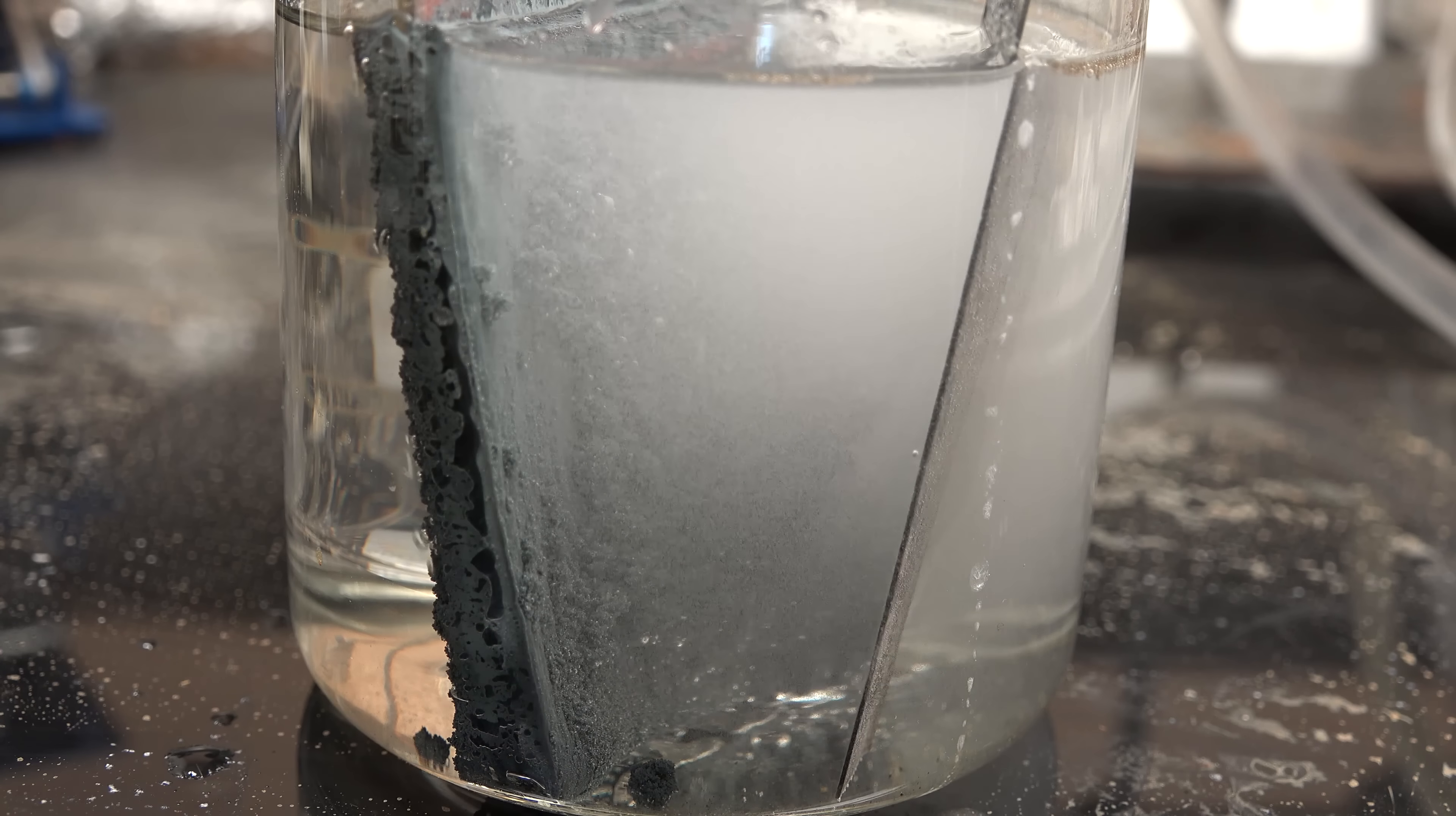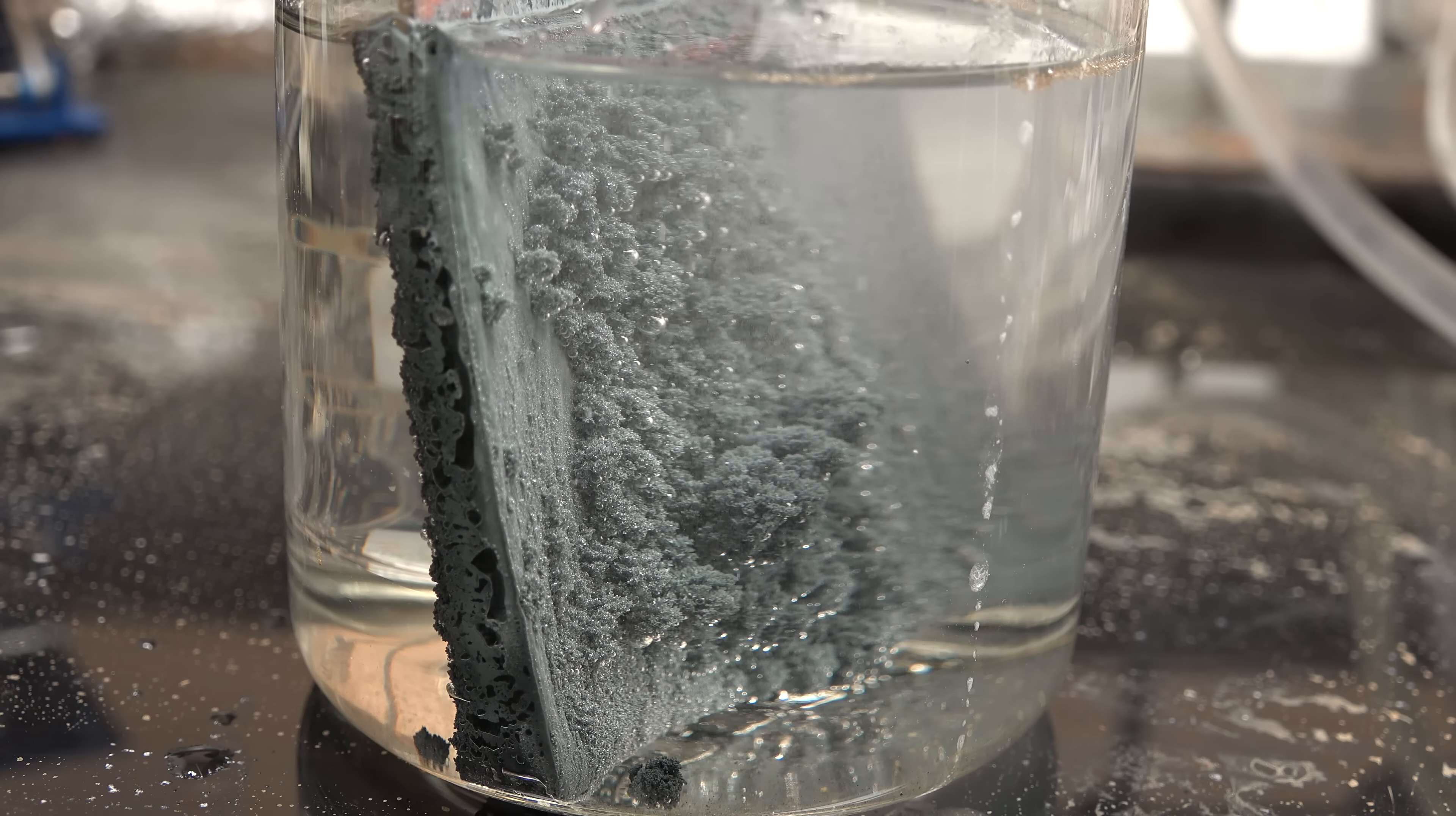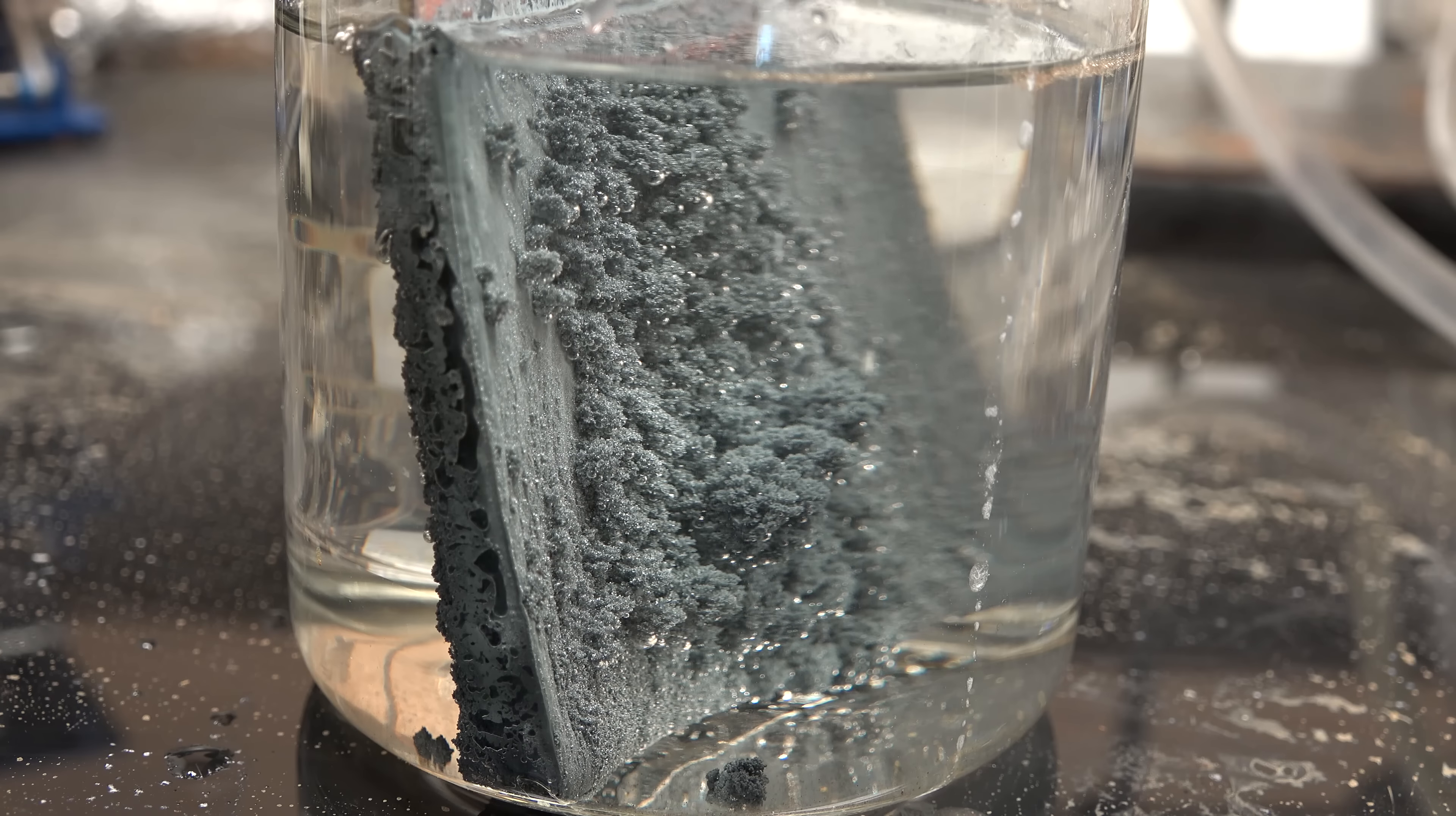And here we are the next day. Let me turn off the current and remove the nickel anode so you can see what we've obtained. So we have a nice thick deposit of zinc. You'll notice that even though we've turned off the power and removed the anode the zinc is still bubbling.